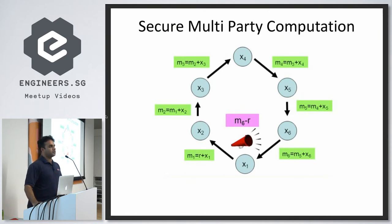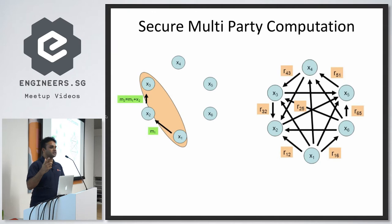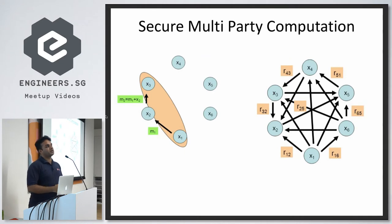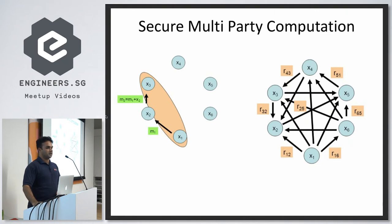The most important assumption is that people do not gossip. If X3 and X1 get together, they can subtract the messages sent between X1-X2 and X2-X3 and find out salaries that aren't theirs. The question is: can you design protocols resistant to collusion and gossip? The answer is yes, it depends on the assumptions you make around how people collude and gossip.